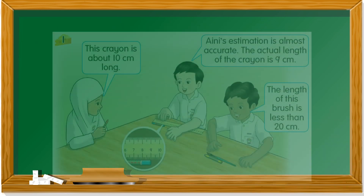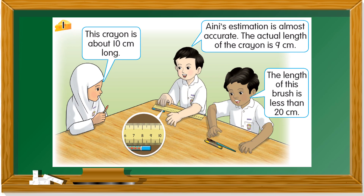Let's take a look at this conversation. This crayon is about 10 cm long. She's holding a crayon and estimating it to be about 10 cm long. Estimate means menganggar — menganggar panjang crayon itu. The boy said, Aini's estimation is almost accurate. Almost — hampir. Accurate — tepat. Hampir tepat. The actual length of the crayon is 9 cm.